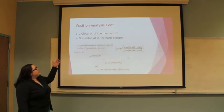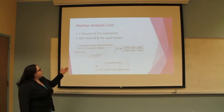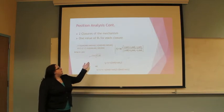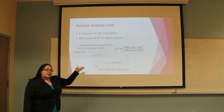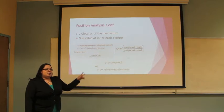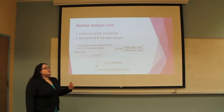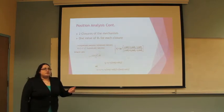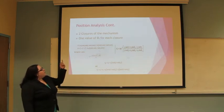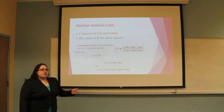The continuation of this position analysis is as follows. There's two closures of the mechanism because in the equation that we're using for r1, the solution under the radical is positive, so we will have two possible solutions for this equation giving us two closures for the mechanism and one value of theta3 for each closure.